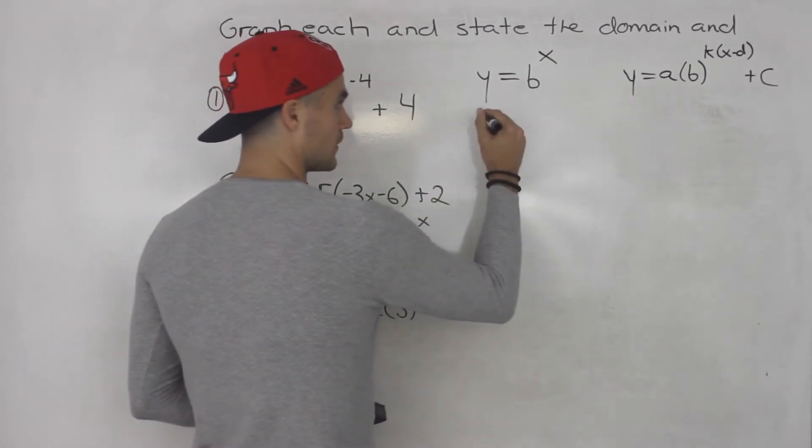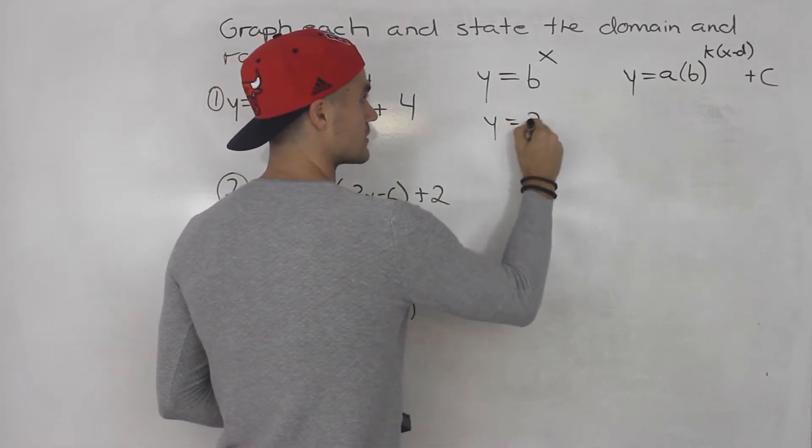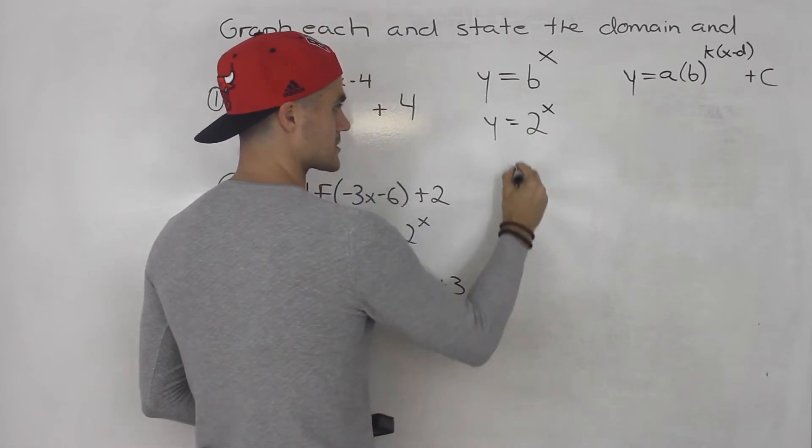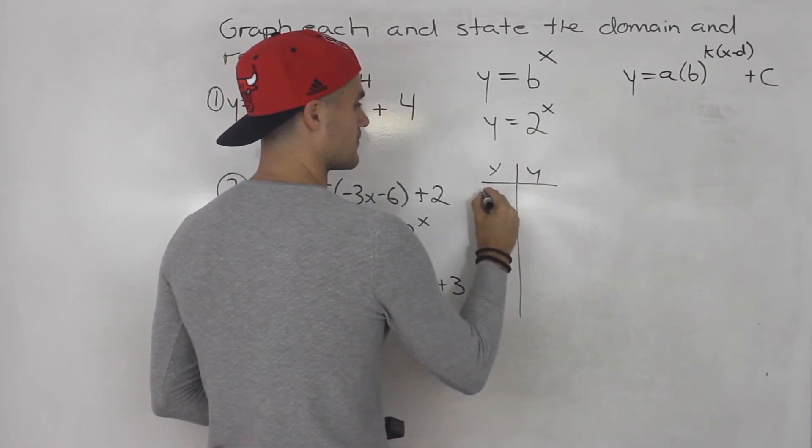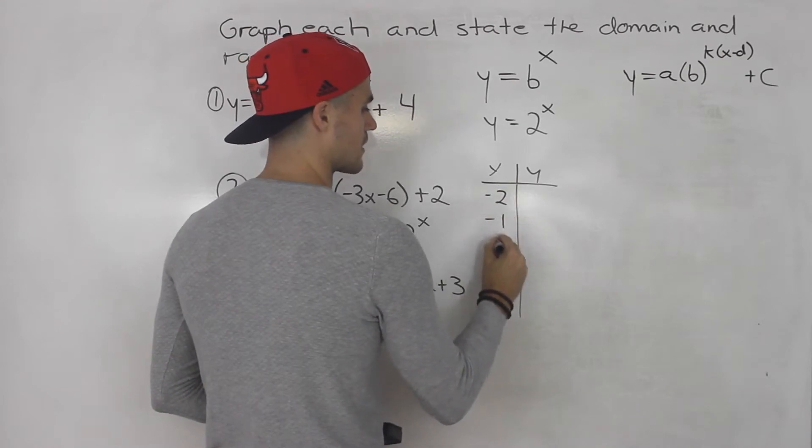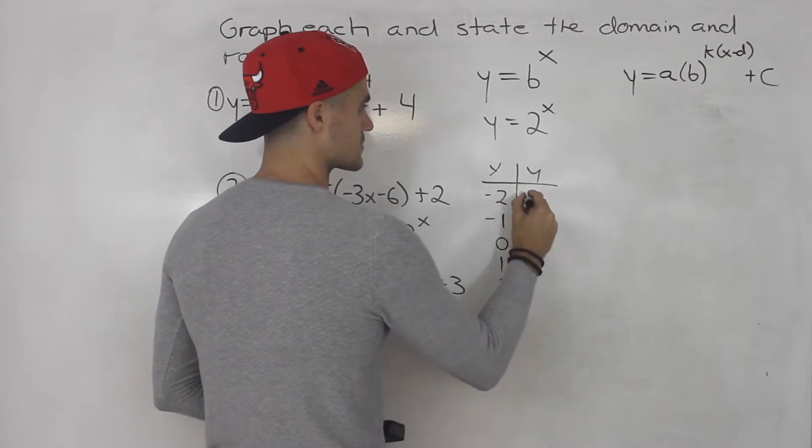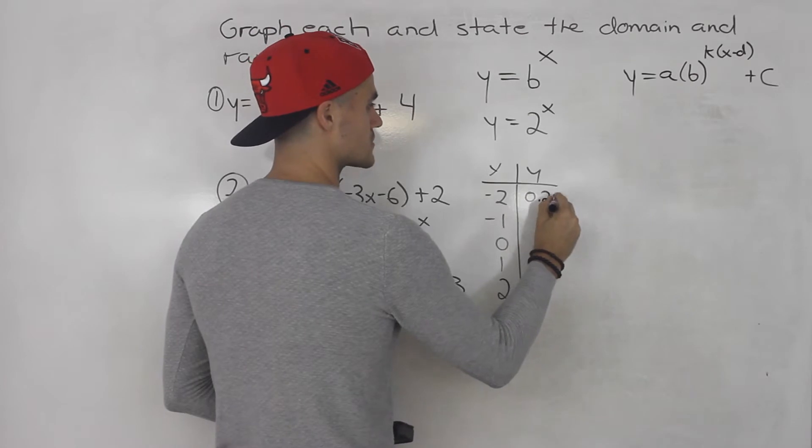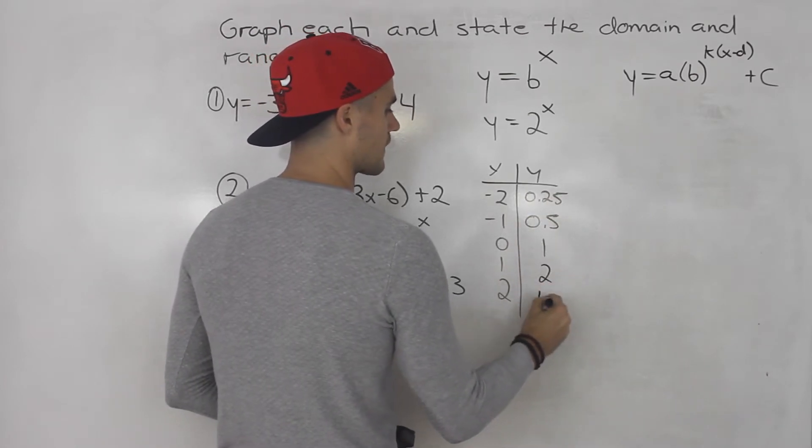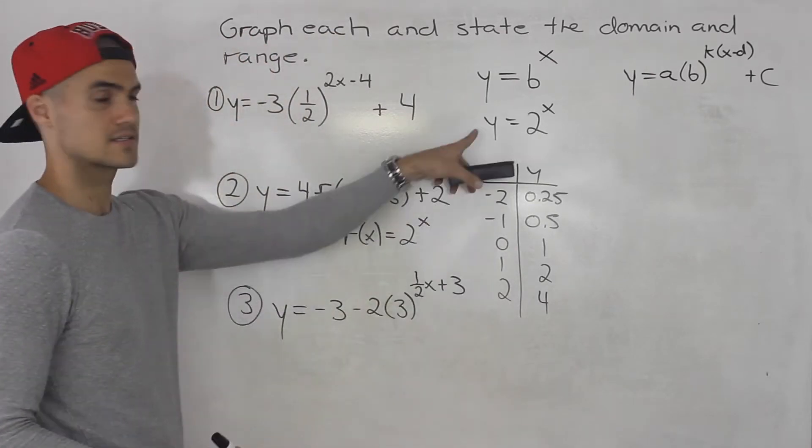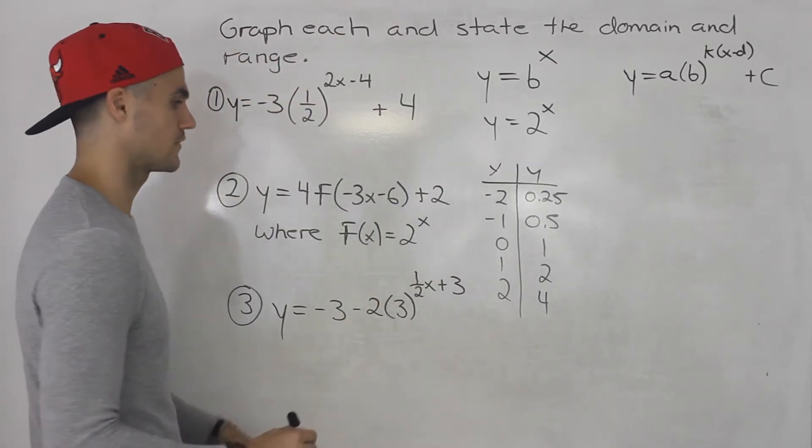Right so here we know that our parent function is 2 to the x and if you want to make a table for it, let's pick five points. So this would be 0.25, this would be 0.5, this would be 1, this would be 2, and then that would be 4. That's the parent table for that parent function.